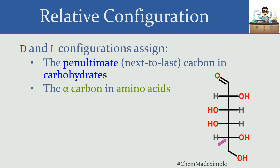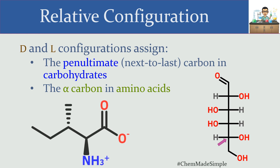If we look at amino acids, when we assign D and L, it's going to be based on the spatial orientation of the substituents around the alpha carbon. The alpha carbon on an amino acid is the one immediately attached to our carbonyl carbon, and it's also where our amino group, R group, and hydrogen are attached. Notice that while this is a chiral center, it is not the only chiral center on our amino acid — there's another chiral center as well. But when we assign D and L, we're looking at that very specific chiral center.